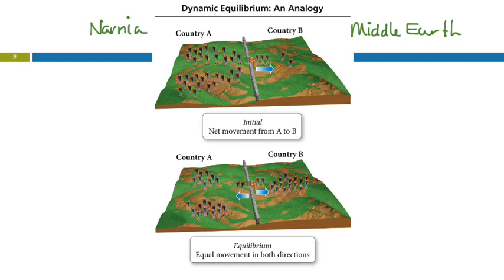As this goes on, we'll come to a point of equilibrium where the rate of people moving from Narnia to Middle Earth is equal to the rate of people moving from Middle Earth to Narnia. That does not mean that you have equal populations in the two countries. Which one does it look like there's more of? It kind of looks the same, doesn't it?